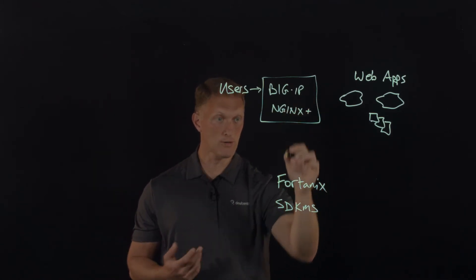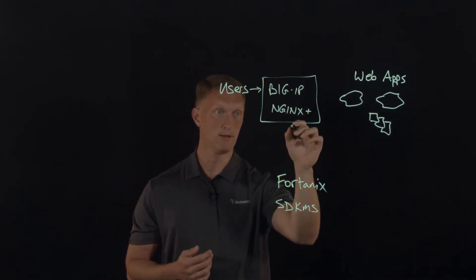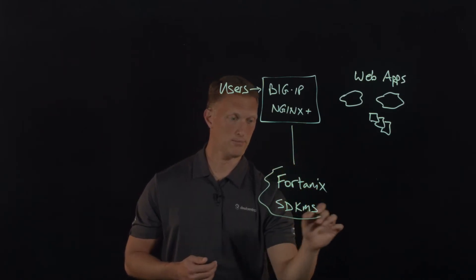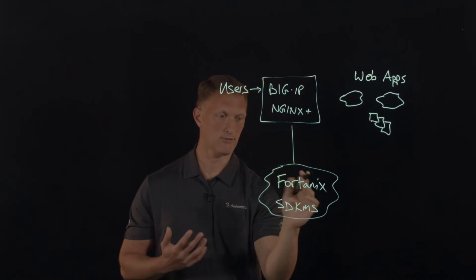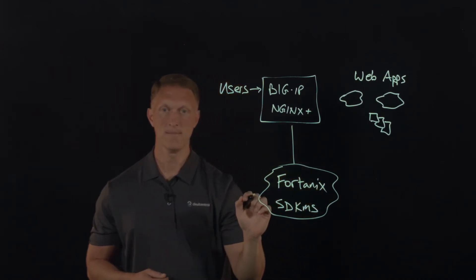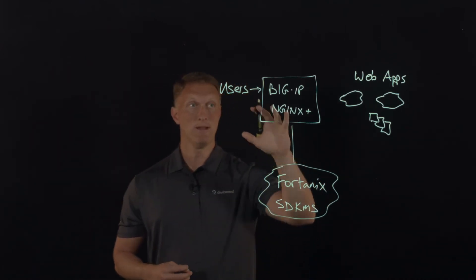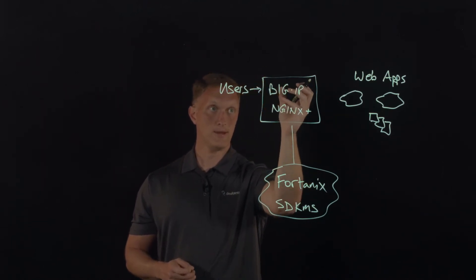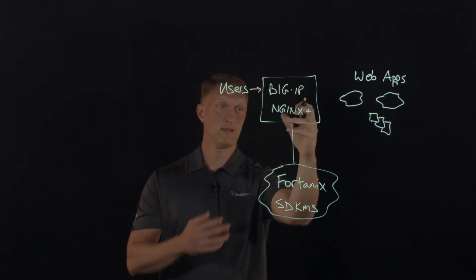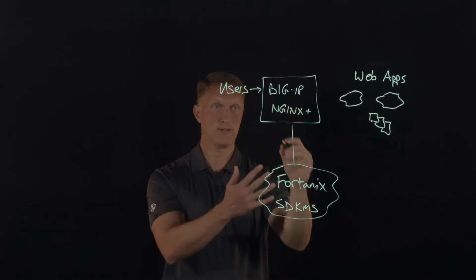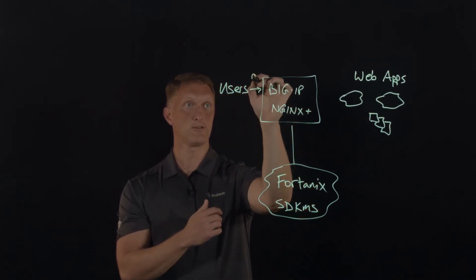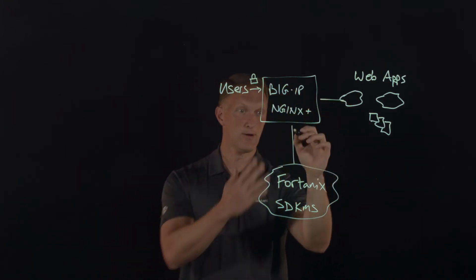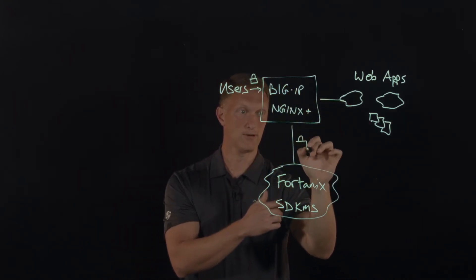And then, but the crypto, the crypto operations are going to be offloaded to Fortanix. So I'll put kind of a cloud on here, but it could also be deployed on-prem, like I said. So, effectively what happens is users come in, they access the Big IP or NGINX plus the crypto operations themselves are offloaded. So this is going to be a secure transaction here.